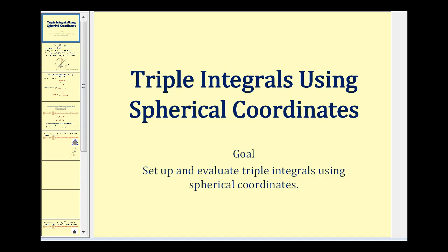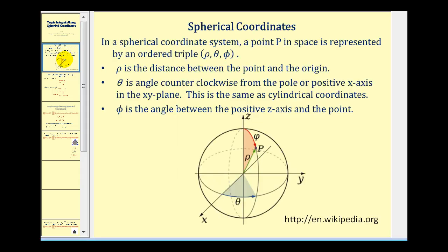Welcome to a lesson on triple integrals using spherical coordinates. In a spherical coordinate system, a point P in space is represented by an ordered triple rho, theta, phi. Where rho is the distance between the point and the origin, as we see here in green. Theta is the angle counterclockwise from the pole, or positive x-axis in the x-y plane, here in blue. And phi is the angle between the positive z-axis and the point, as we see here in red.